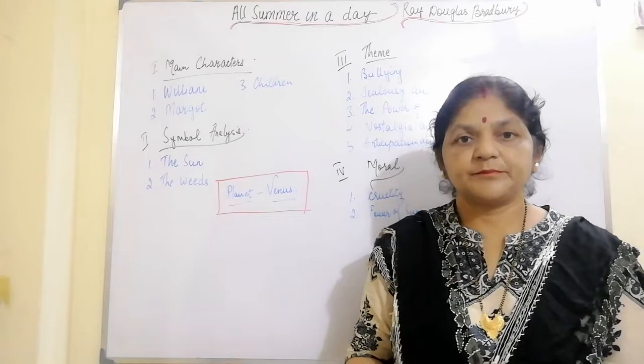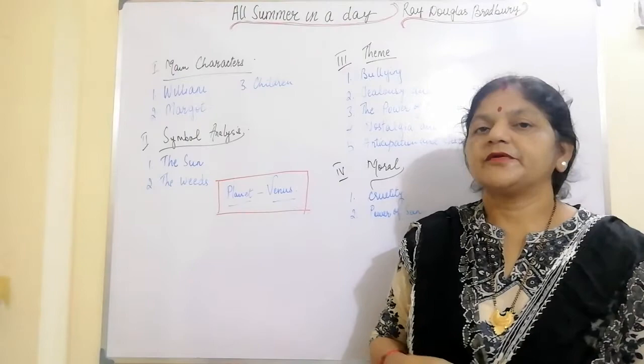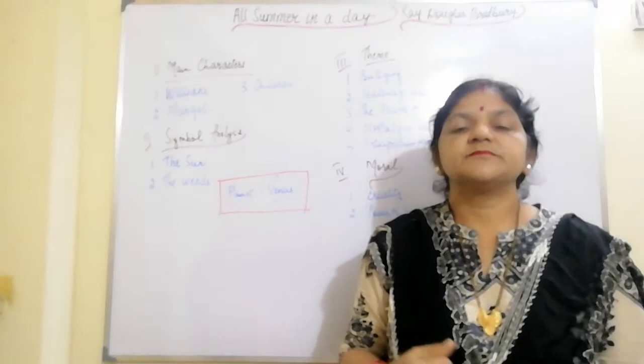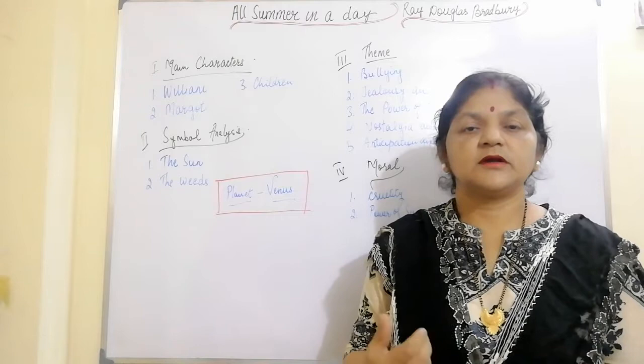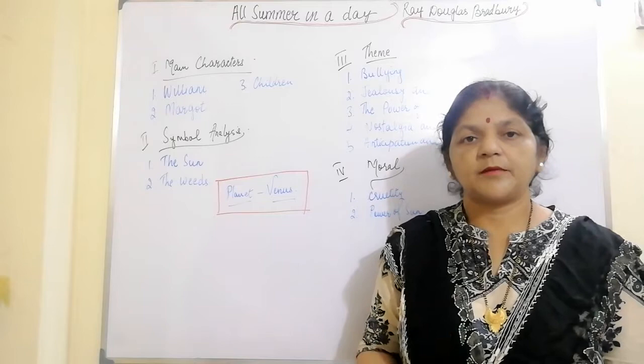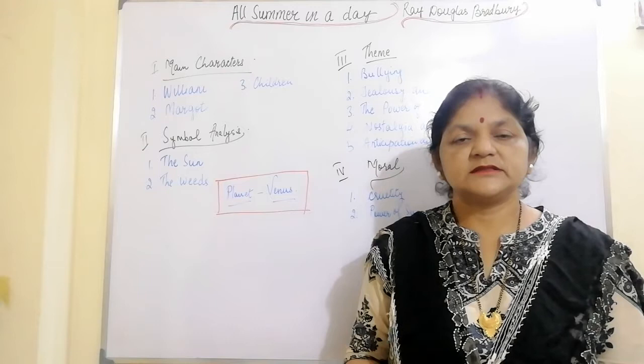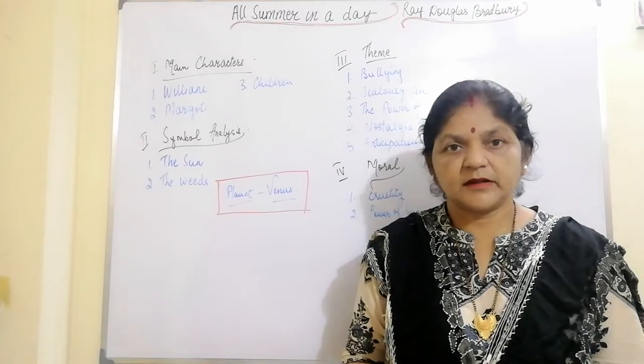Now I will give you a brief description about the author Ray Douglas Bradbury. Ray Douglas Bradbury was an American author and screenwriter. He worked in a variety of genres including fantasy, science fiction, horror and mystery fiction. He was born on 22nd August 1920 and died on 5th June 2012 at Los Angeles, California in the United States.